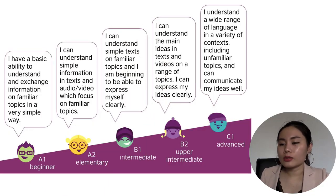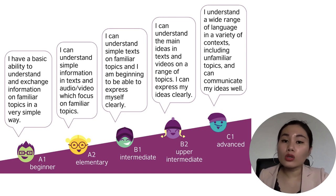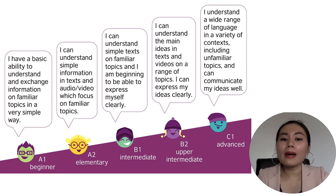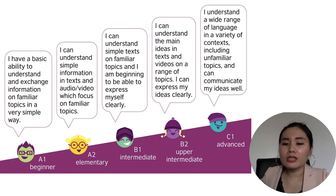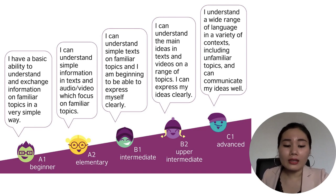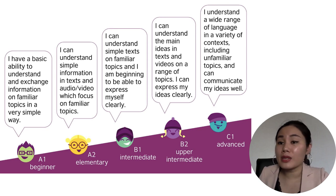Vậy thì cách tốt nhất để giải quyết vấn đề này đó là bạn hãy đặt một cái mục tiêu mà trong cái tầm với của bạn. Đối với việc học tiếng Anh chúng ta sẽ nhìn vào cái bảng CEFR — tức là bảng năng lực ngôn ngữ tổng quát — thì chúng ta phải định hình được là chúng ta đang ở level nào. Ví dụ các bạn ở beginner A1 thì bạn nên đặt mục tiêu chỉ đến trình độ A2 elementary hoặc cùng lắm là đến B1 intermediate thôi.